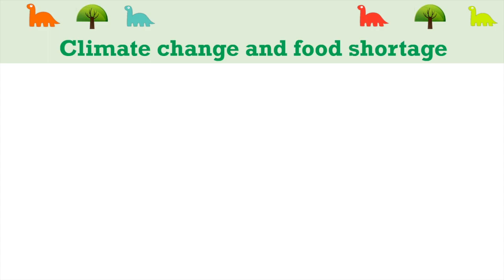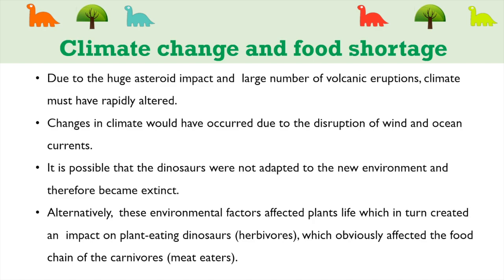One theory of dinosaur extinction is based on climate change and food shortage. It states that due to the huge asteroid impact and large volcanic eruptions, climate rapidly altered. Changes in climate occurred due to disruption of wind and ocean currents. It is possible that dinosaurs were not adapted to the new environment and therefore became extinct. These environmental factors also affected plant life, which impacted plant-eating dinosaurs and consequently affected carnivores.